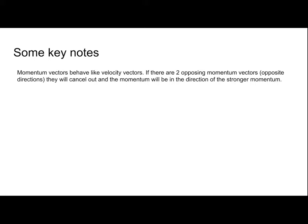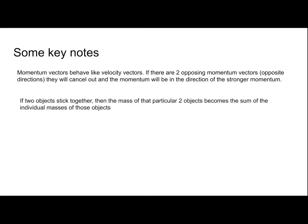Some key notes: momentum vectors behave like velocity vectors. If there are two opposing momentum vectors, they cancel out and momentum is in the direction of the stronger one — for example, 5 kg·m/s left and 6 kg·m/s right gives a resultant of 1 kg·m/s to the right. If two objects stick together, their combined mass is the sum of individual masses. A stationary object always has zero momentum since v = 0, and anything times 0 is 0.